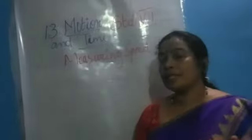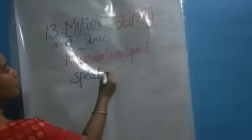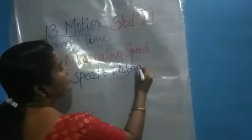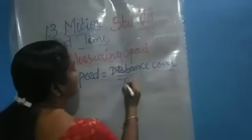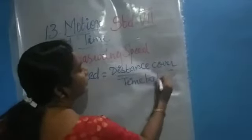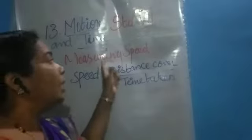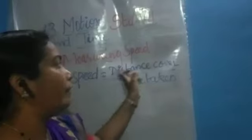We already discussed how to measure distance in 6th standard itself, isn't it? Then how will we measure speed? What is speed? Speed is nothing but the distance covered divided by the time taken. We can define the speed of an object as the total distance covered by the object divided by the total time taken to cover that distance. That is called speed.